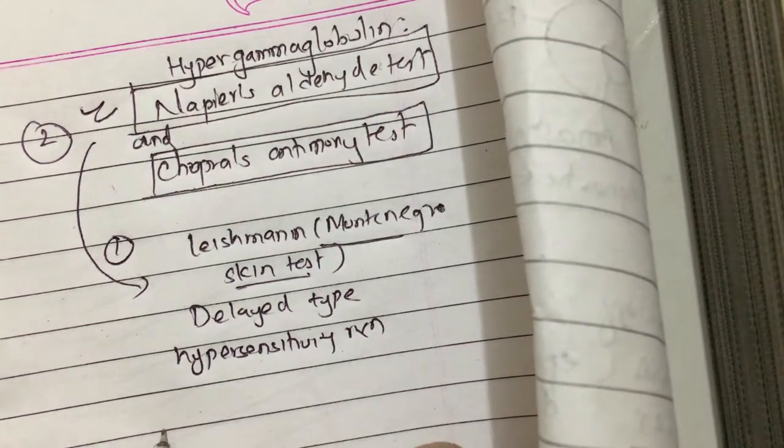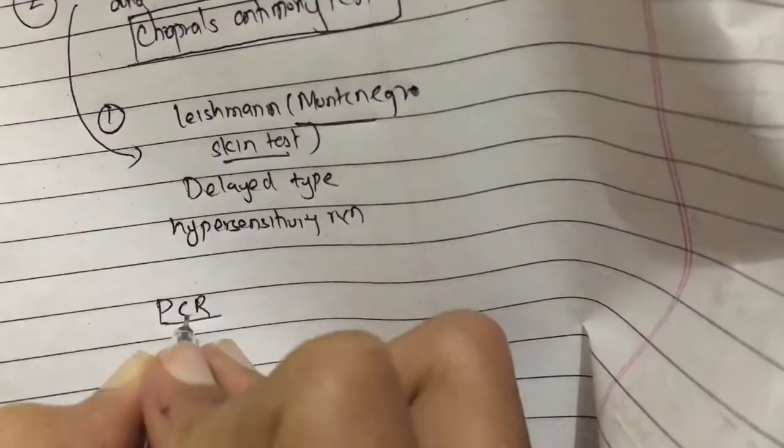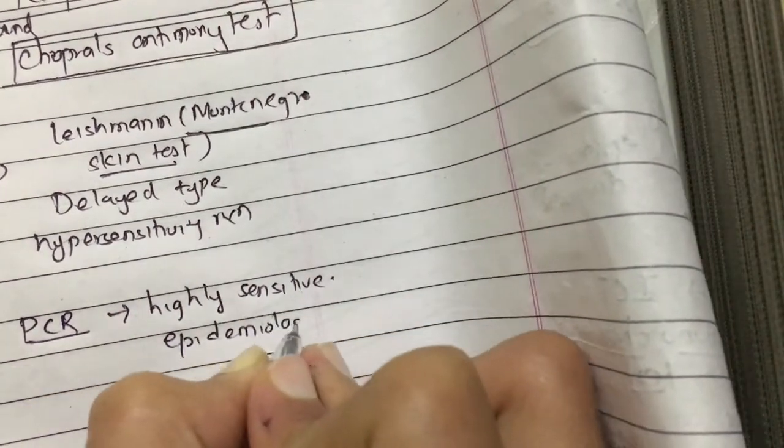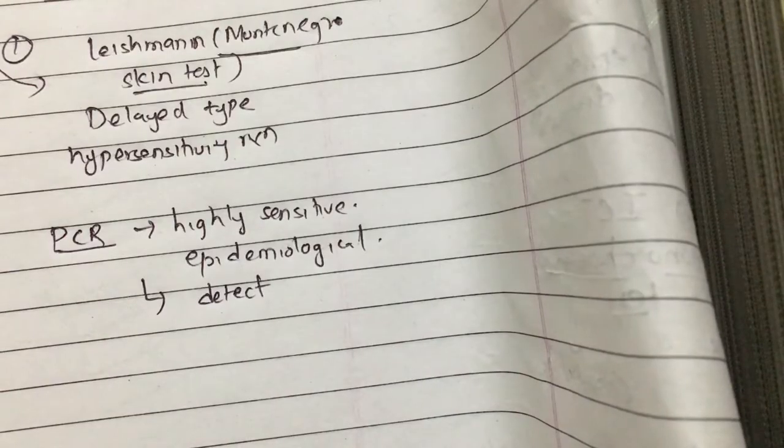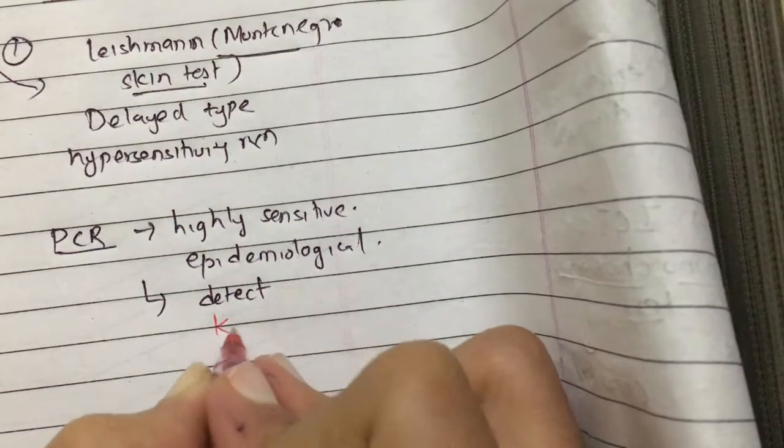Finally, we have PCR. PCR is highly sensitive but it is not practical to use, so it is only used for epidemiological purposes. In PCR, we detect kinetoplast DNA.